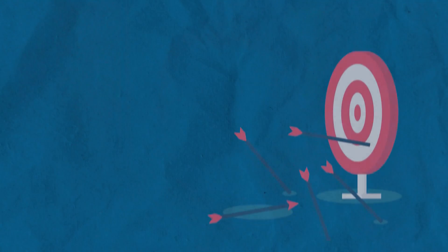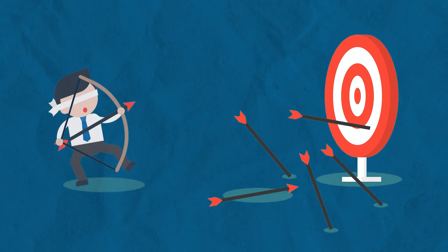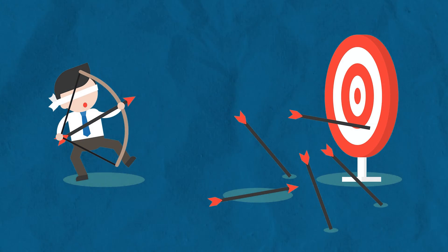Conversion tracking is absolutely essential before you get your campaigns running, because you cannot hit a target that you can't see. You have no idea where you are unless you set this up and you see where you're going.